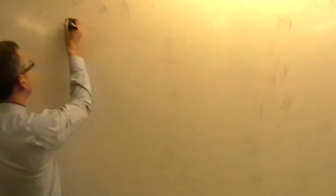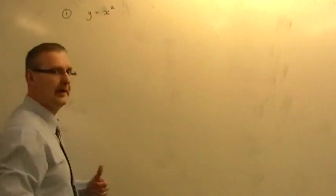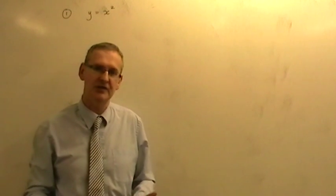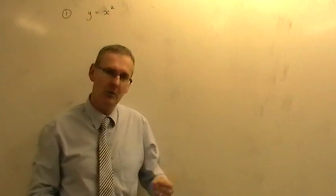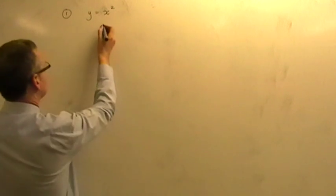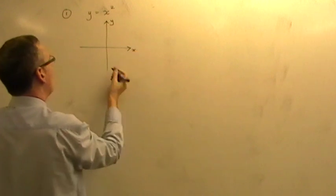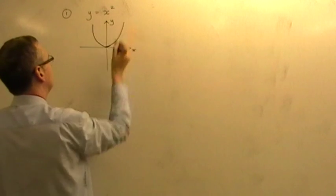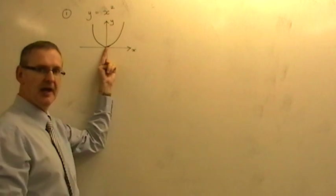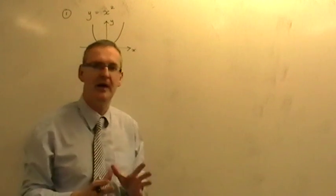All this work is based on you memorizing the very first one. Number one: you should know and learn off by heart the picture of y equals x squared. In a previous video we have plotted it accurately, so you should know what it looks like. Y equals x squared is a symmetrical u-shape with the bottom of the u at the origin on the y-axis. Learn that off by heart.